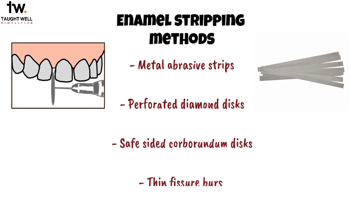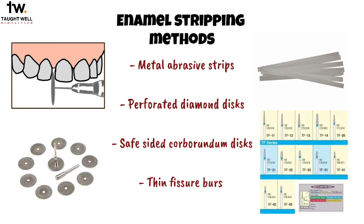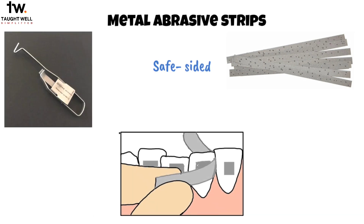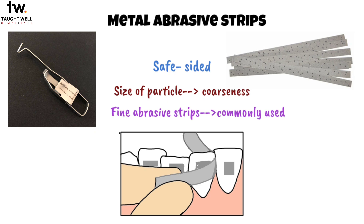Finally, enamel stripping methods include metal abrasive strips, perforated diamond discs, safe-sided carborundum discs, and thin fissure burs. Metal abrasive strips have abrasive particles on one side and are usually safe-sided. Special holders are available for convenience. The size of the particles determines the coarseness of the strips, with fine abrasive strips commonly used to prevent deep enamel scratching.